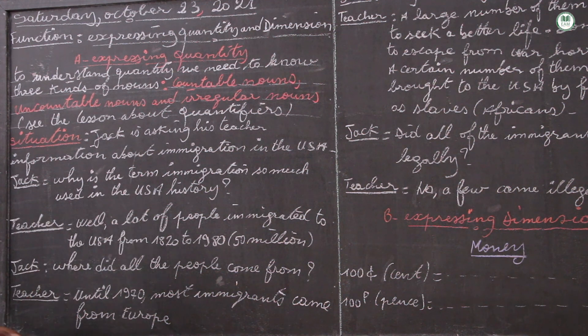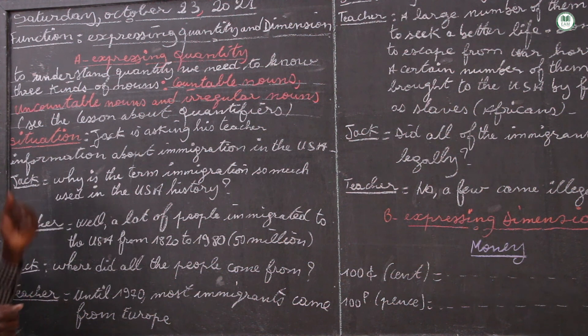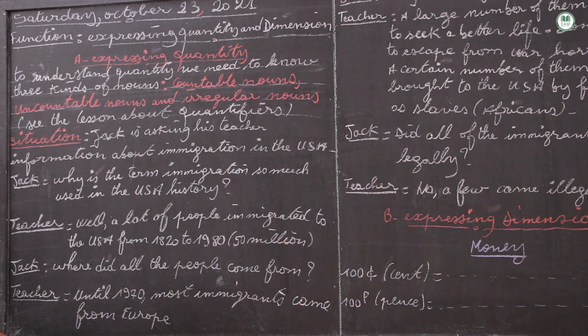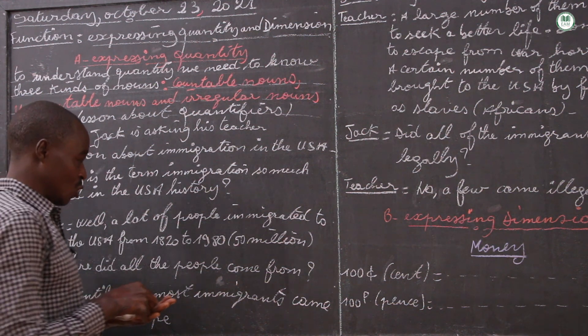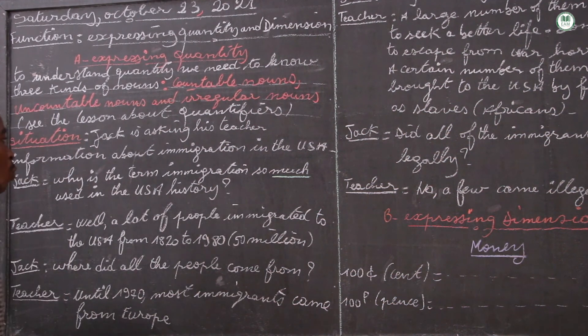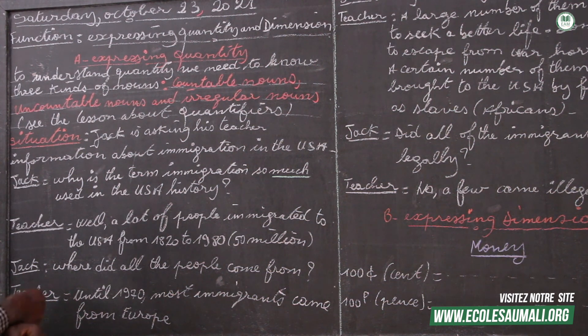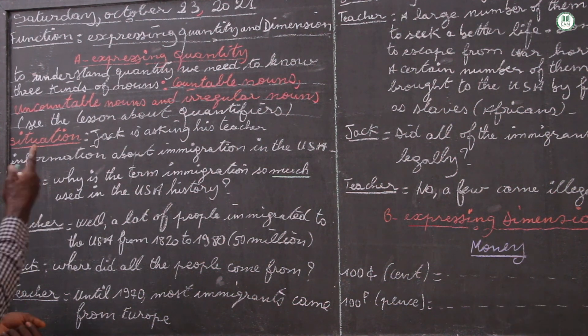There is a dialogue between Jack and his teacher about this topic, so we will try to see what quantifiers we have here to clarify the situation. Jack is asking a question: why is the term immigration so much - so we have a quantifier, so much - used in USA history?